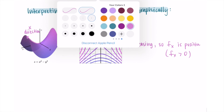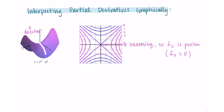Now we can look at going in the y-direction. Going in the y-direction, we kind of go downhill — we're falling off the edge. This should look the same when we look at going in the positive y-direction on the level curves. Starting at the 0 point, we'd be going to negative 1, negative 2, negative 3. So these would be going downhill or decreasing as we go positive on the y. This means the partial derivative with respect to y is negative, since we're going downhill or decreasing — f sub y is less than 0.